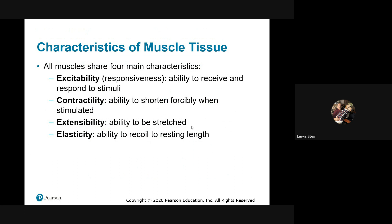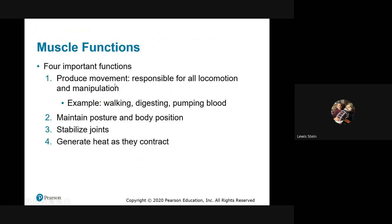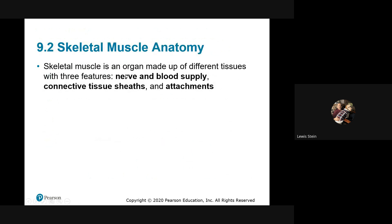There are specific proteins that allow both stretchability and elasticity. The functions include movement, posture, and joint stability — the shoulder is a great example. And there's heat generation: when you're cold you shiver, and those are skeletal muscles contracting and generating heat. Muscles are also organs in the sense that they have neurovascular elements — nerves, arteries, and veins — as well as the muscle tissue itself.